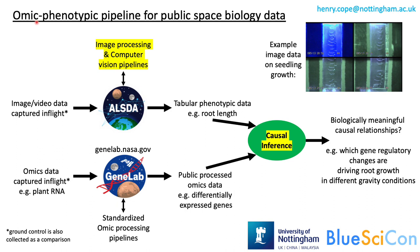The title of the project is Omic Phenotypic Pipeline for Space Biology Data. Space biology is where we send Earth-based life to space to see how it adapts. That could be to look at health effects of spaceflight and try to improve that, or in the case of plants, to look at how best to grow them in places like the Moon and Mars.